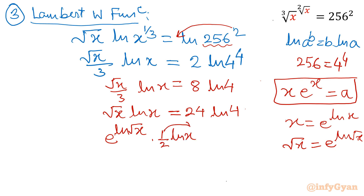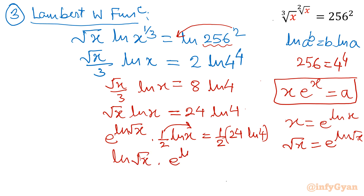I will put a half into the exponent. Once I bring half towards the power on the left, I need to do the same on the right hand side as well. So ultimately the left hand side will convert to ln root x times e raised to the power ln root x equal to 12 ln 4. Check: 24 over 2 is 12.